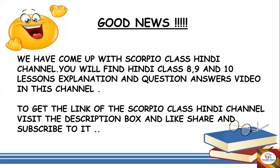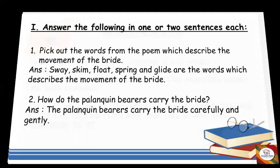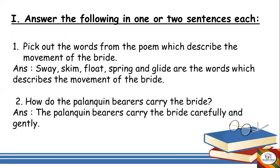Now let's go ahead and look at the question and answers. It was a very short poem with a few question answers, so let's quickly revise and discuss it. The first section is: answer the following in one or two sentences each. First question: pick out the words from the poem which describe the movement of the bride. The words are sway, skim, float, spring, and glide. These are the words which describe the movement of the bride.